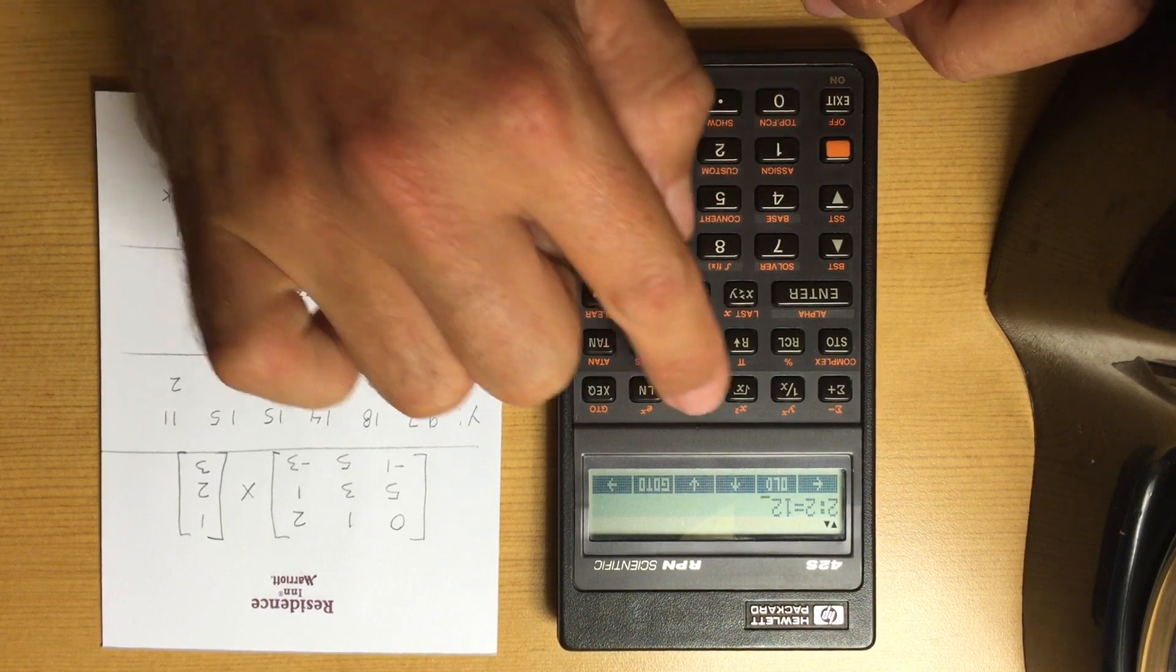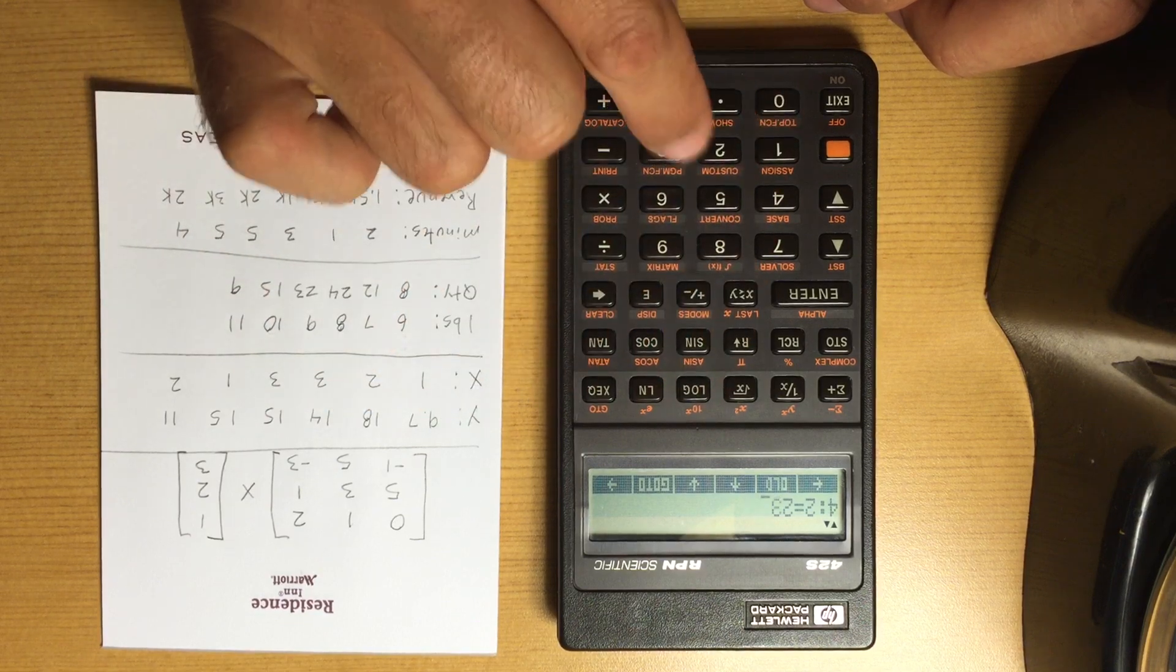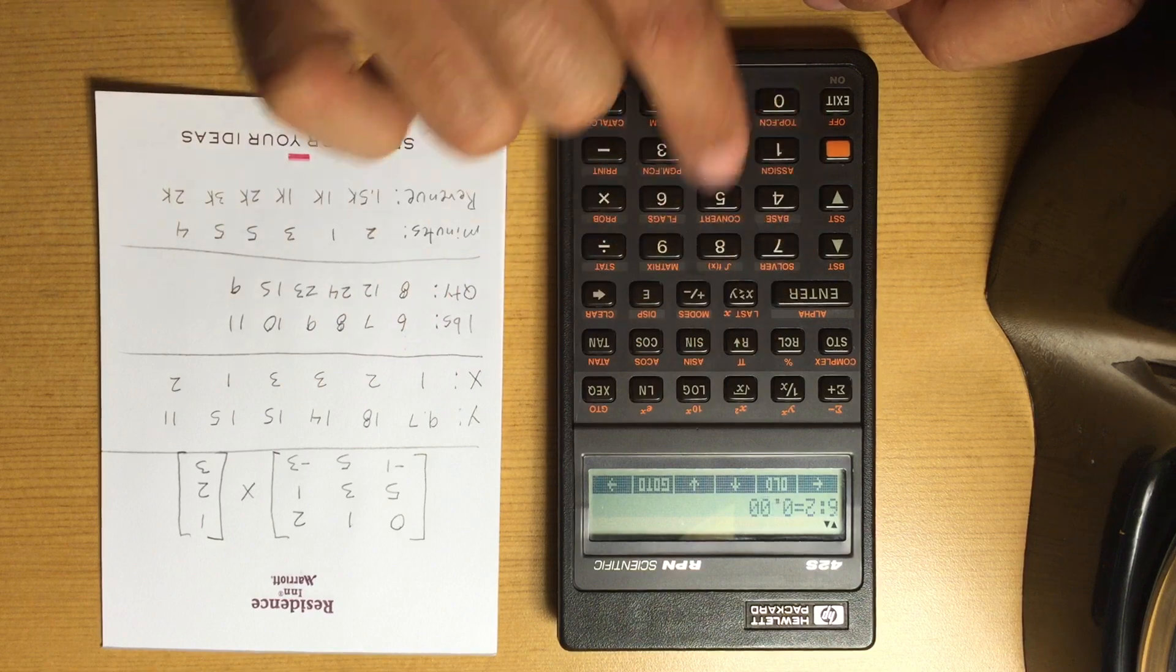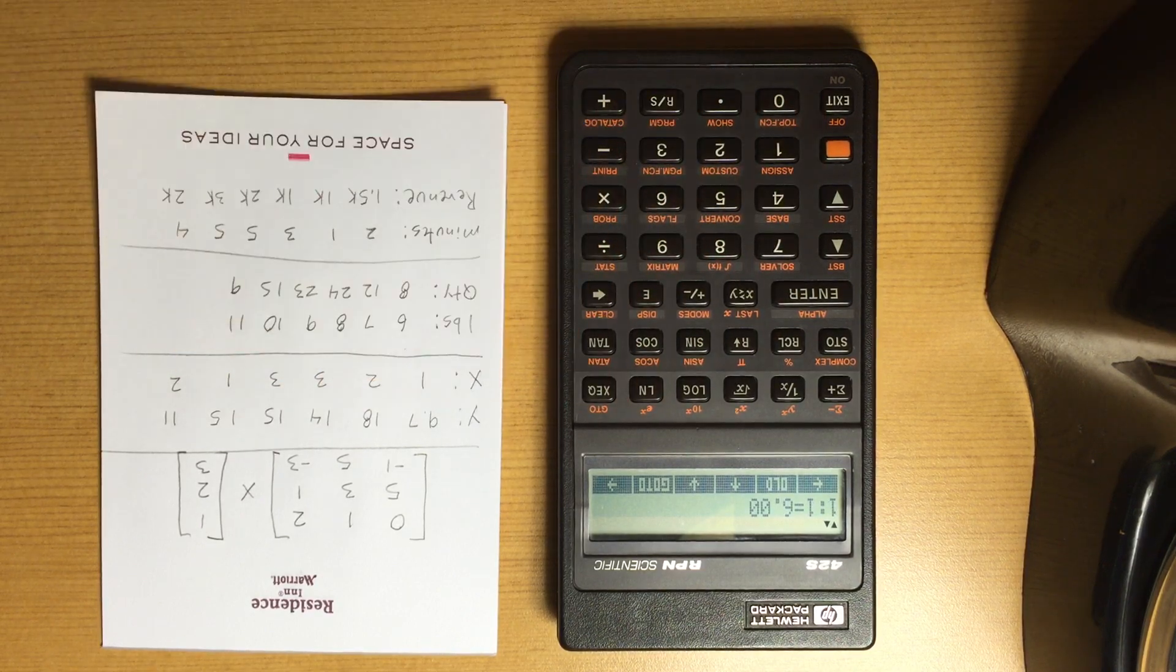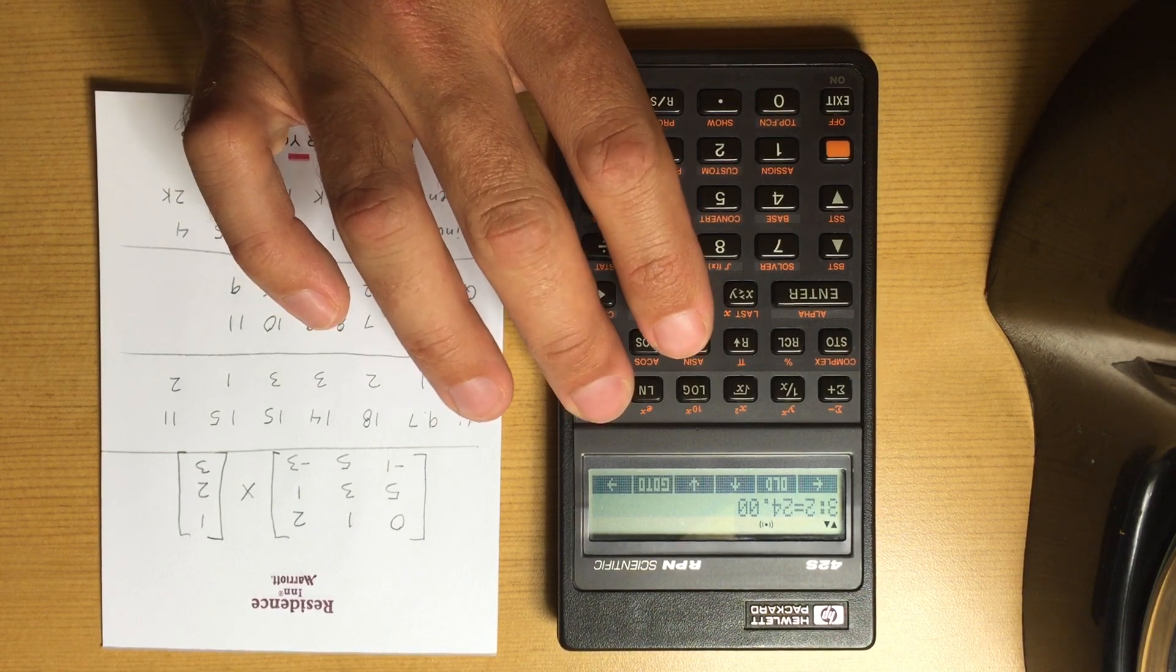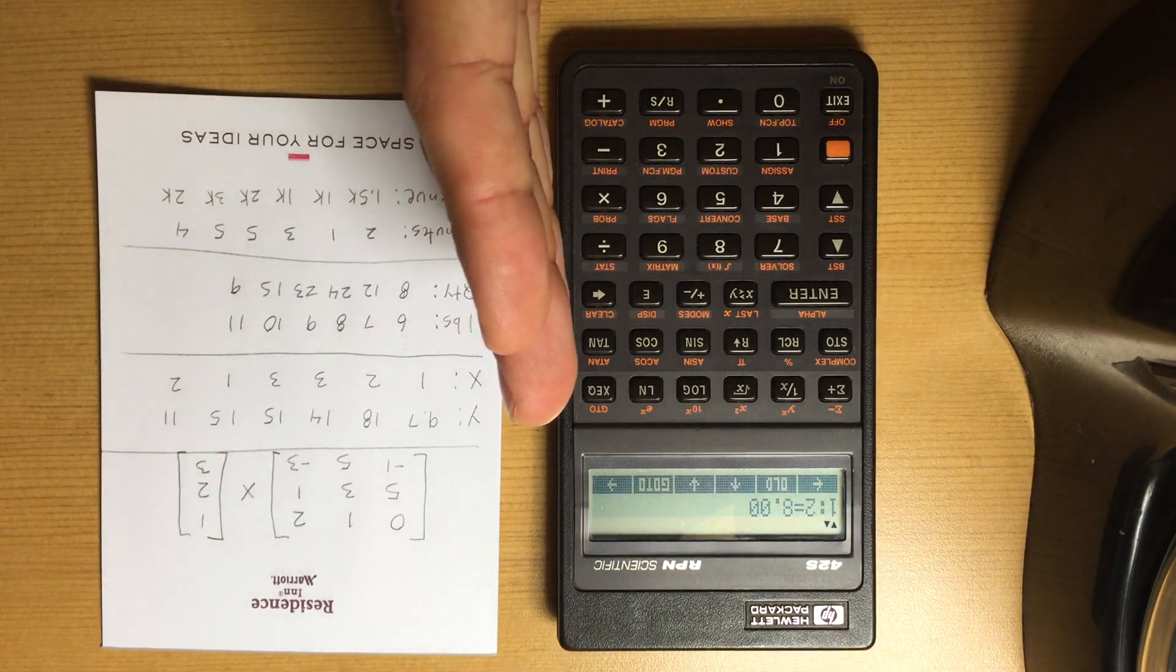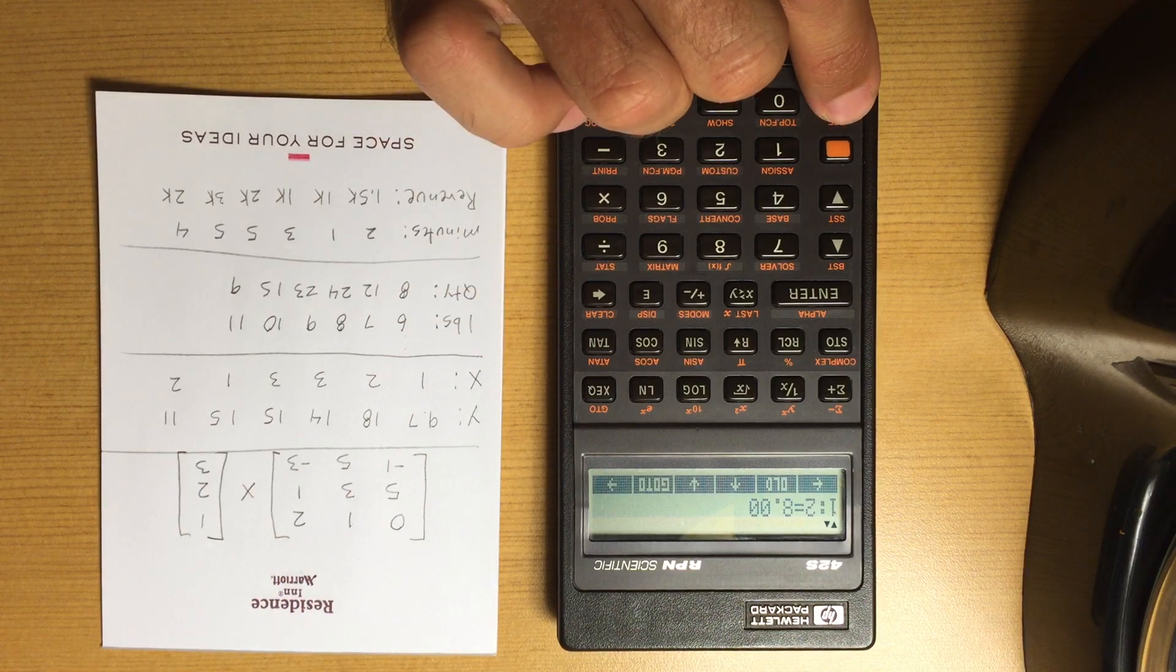That's going to be 8, and that's going to be 12 and 24 and 23 and 15 and 9. So now I've actually got all the data stored in matrix form, so I can go back and change it if I want. I've just got my X column—my first column is my X column, my second column is my Y column.